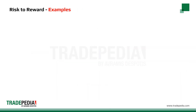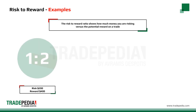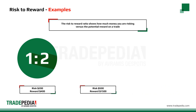Let's look at a few examples of risk-to-reward ratios. If the risk is $200 and the reward is $400, dividing 200 by 400 gives a risk-reward ratio of 1 to 2. If the risk is $500 and the reward is $1,500, dividing 500 by 1,500 gives a risk-reward ratio of 1 to 3.